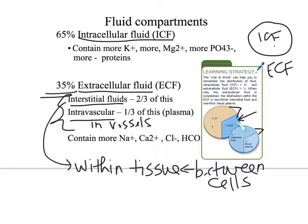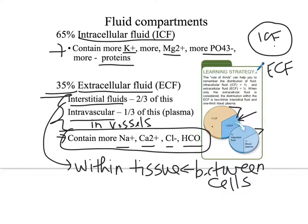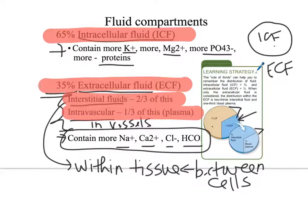Within the fluids, we have different distributions of ions and electrolytes. The fluid within the cell has more potassium, magnesium, phosphate, and proteins. The extracellular fluid has more sodium, calcium, chloride, and bicarbonate. You need to know where these ions should normally be — which are higher in the cell and which are higher outside the cell.